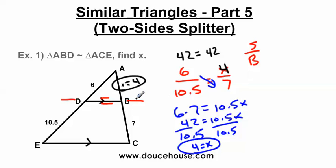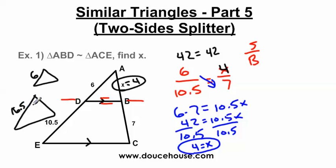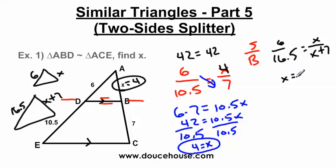If you wanted to, you could have done small triangle over big triangle: 6 over 16.5 equals x over x plus 7. If you did the math there, you would still get x equals 4. You're welcome to work it that way, but the parallel lines proportion looks much easier. Whenever you have a two side splitter — meaning the side of one triangle is splitting two sides of another triangle and you have parallel lines — you can set up the proportion that way and it makes life a lot easier.